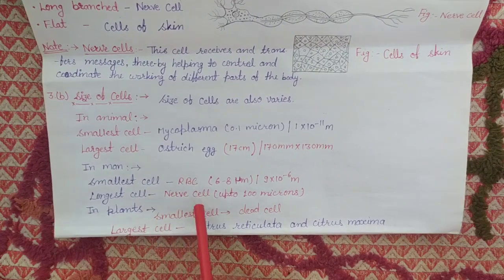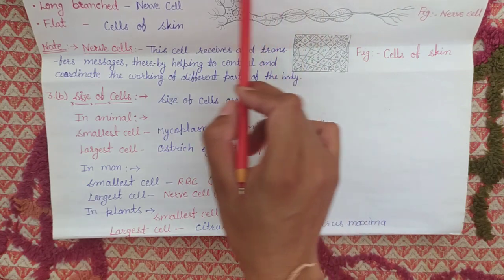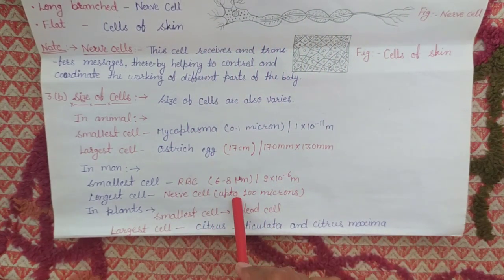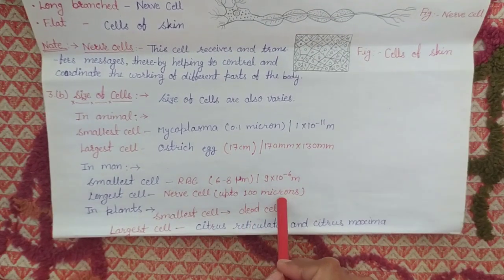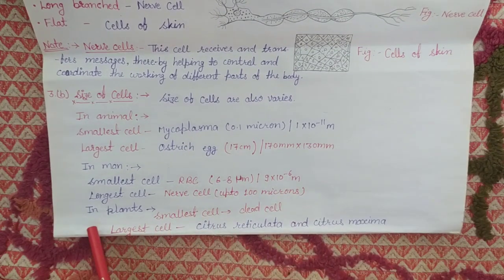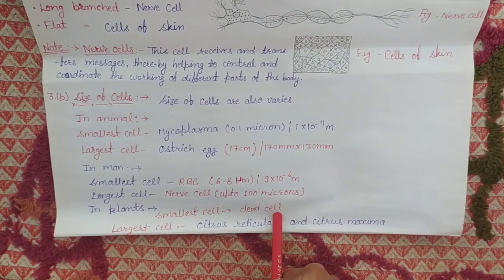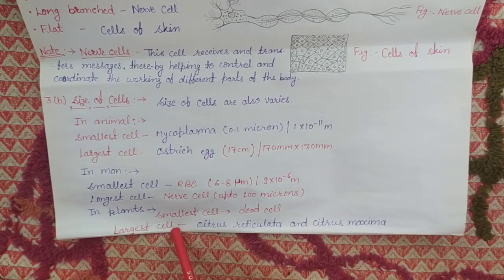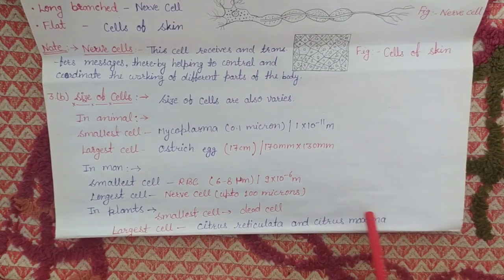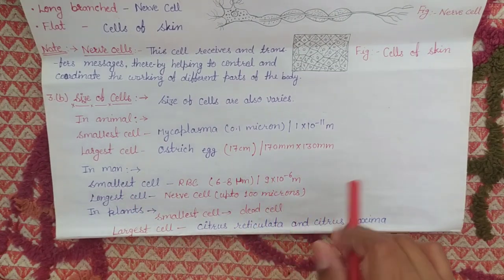The longest cell in the human body is the nerve cell. Its size is up to one hundred microns or more. In plants, the smallest cell is the dead cell, and the largest cells are Citrus sinensis and Citrus maxima. You will see this from here.